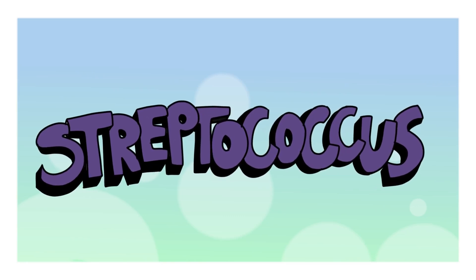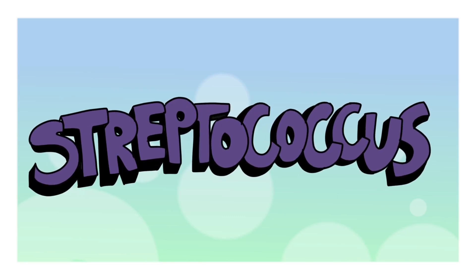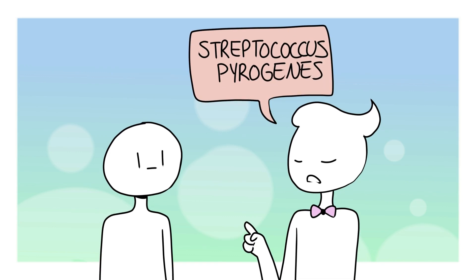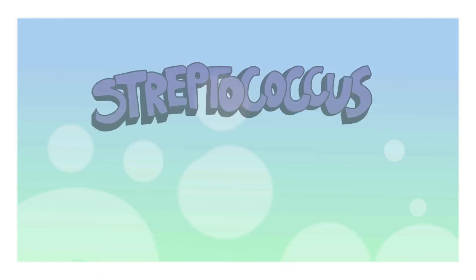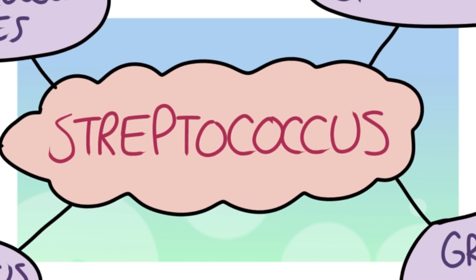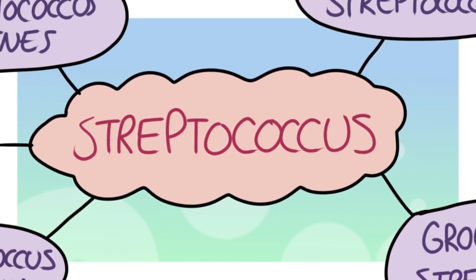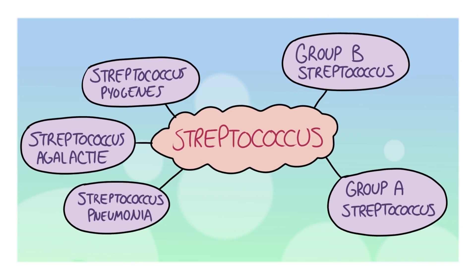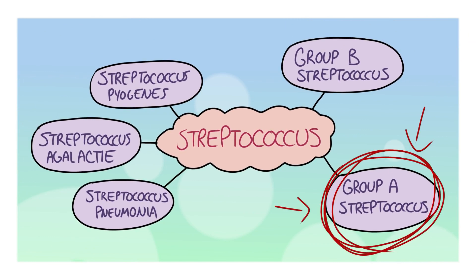Streptococcus, more commonly known as strep throat. The scientific name for it is Streptococcus pyogenes, and it comes from the Bacilli class. There are many types of streptococcus — not all of them are just strep throat — but the one we're going to be talking about is group A streptococcus, which is strep throat.